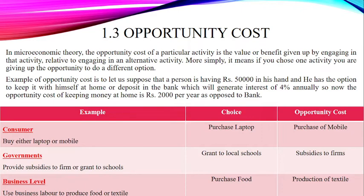The second or next best alternative forgone — the choice you make and the cost of that choice — is known as opportunity cost. It means if you choose one activity you are giving up the opportunity to do a different option. For example, suppose a person has 50,000 rupees and has the option to keep it at home or deposit it in the bank, which would generate a 4% interest rate. The opportunity cost of keeping money at home would be 2,000 per year.